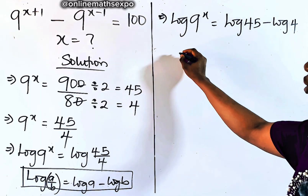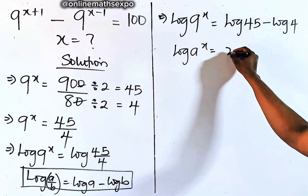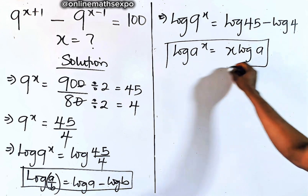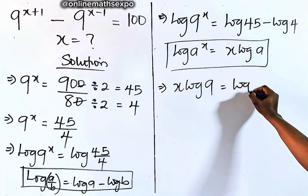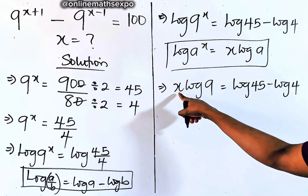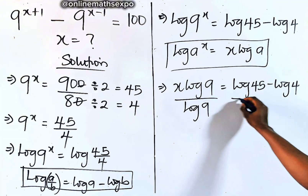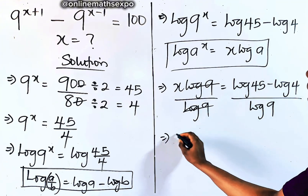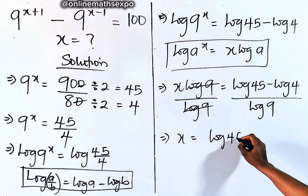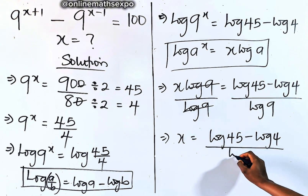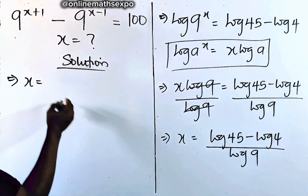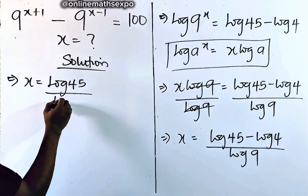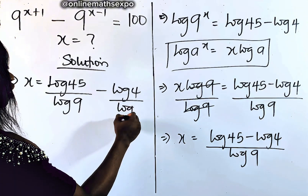Remember for every log of a to the power of x, the power multiplies, giving you x log of a. Applying this on the left side, this x multiplies, so we have x log of 9 is equal to log of 45 minus log of 4. To get x, we divide both sides by log of 9. So we have x is equal to log of 45 minus log of 4, all divided by log of 9.